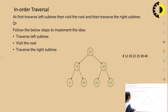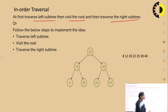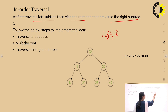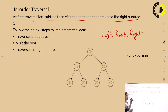Now for inorder traversal: we keep in mind that in inorder, we first traverse the left subtree, then visit the root, and then traverse the right subtree — that is, left, root, right. These are the steps to follow for inorder traversal.